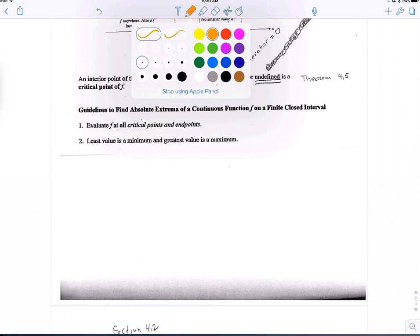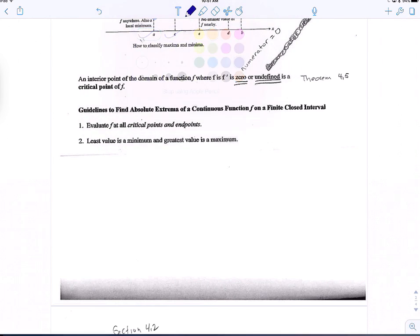So the first one, let me get a different color. We're going to do is, if I give you the function that we're going to work with, it's going to be 3x to the 4th minus 4x cubed. And we want to look at the interval from negative 1 to 2, the closed interval between negative 1 and 2.